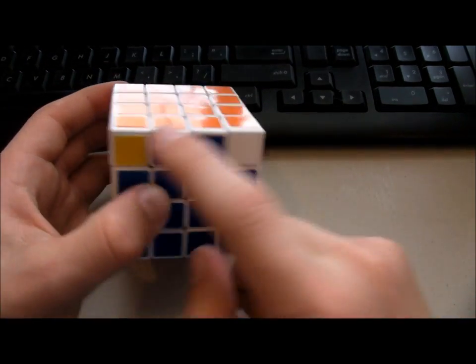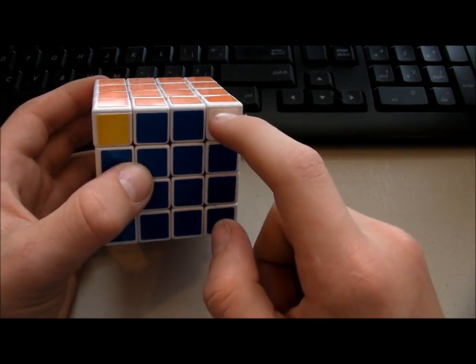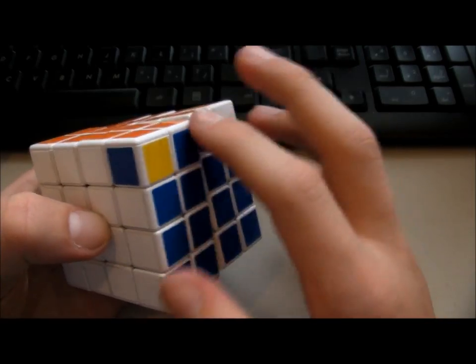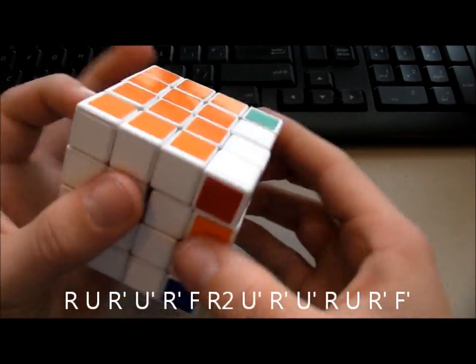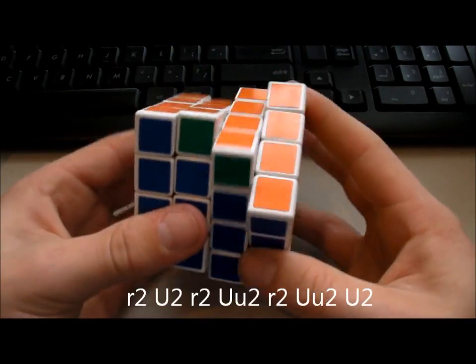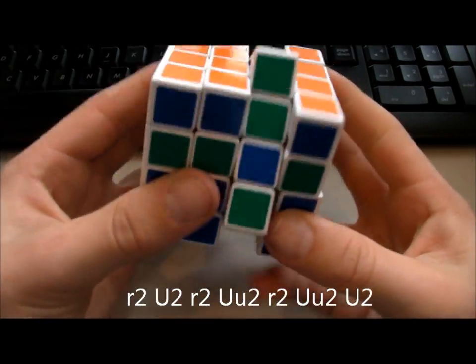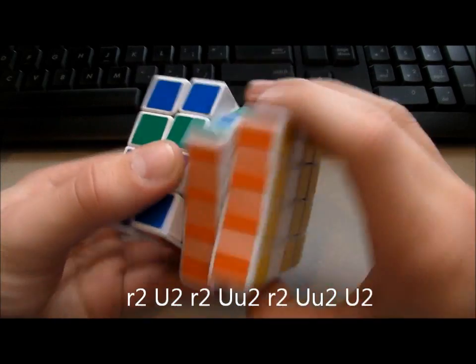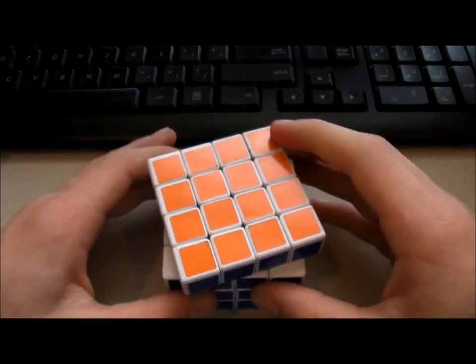All right, and for the other case where these two adjacent corners need to be swapped, you just use the T-perm and it will swap them, and then you have to do that other algorithm. So as you can see, we have that. There we go.